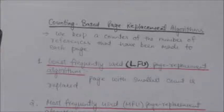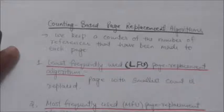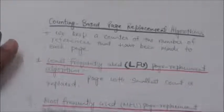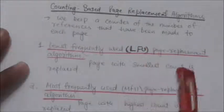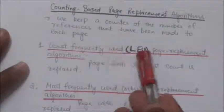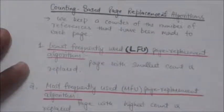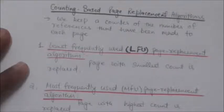Now we will study about counting-based page replacement algorithms. In these algorithms, we keep a counter of the number of references that have been made to each page. One of the counting-based page replacement algorithms is the Least Frequently Used page replacement algorithm, that is the LFU page replacement algorithm. In this algorithm, whenever there is a page fault and a page in main memory has to be replaced, the page with the smallest count is replaced.